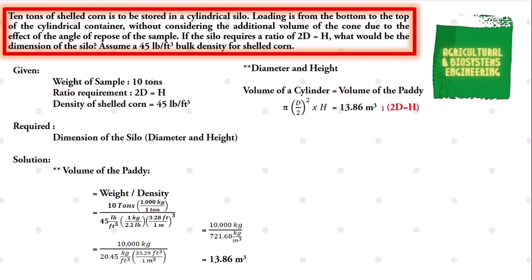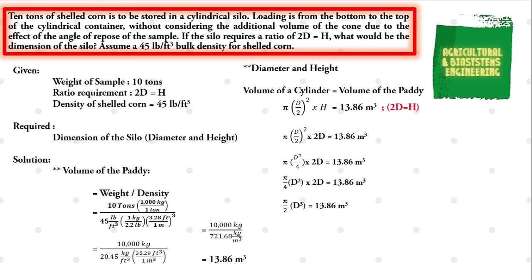We now have pi times (diameter over 2) squared, times 2d, equal to 13.86 cubic meters. Solving, we get pi times diameter squared times 2d equal to 13.86 cubic meters. Extracting pi over 4 gives us pi over 4 times diameter squared, multiplied by 2d, equal to 13.86 cubic meters. Multiplying the left side gives pi over 2 times the cube of the diameter equal to 13.86 cubic meters. Dividing both sides by pi over 2, d equals the cube root of 8.82 cubic meters. Solving, we get a final value for the diameter of 2.07 meters.